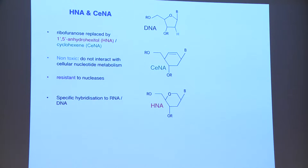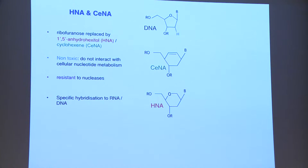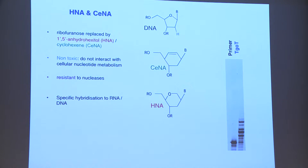But importantly, they retain the ability to specifically hybridize to both DNA and RNA, and that's clearly important for information transfer. But orthogonality has its price — they're truly terrible polymerase substrates.